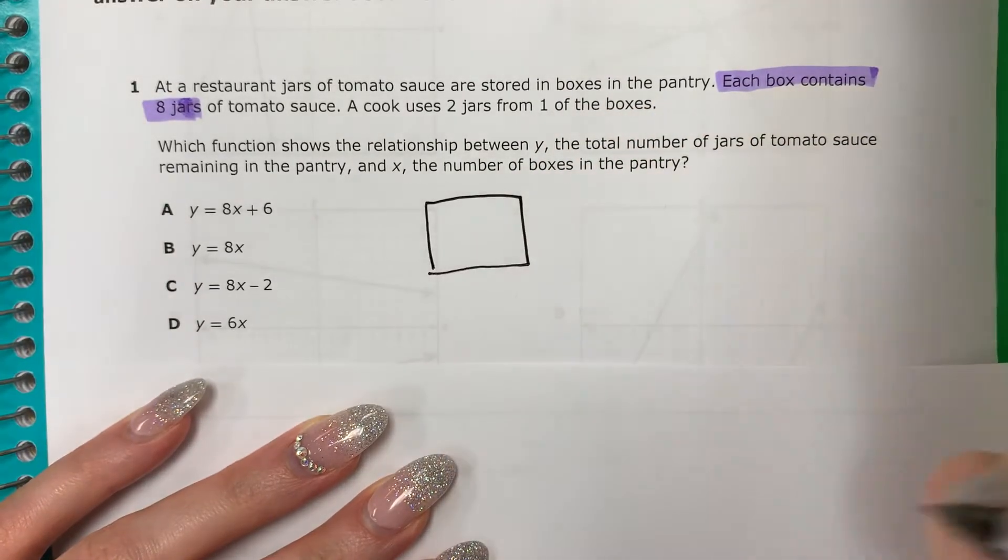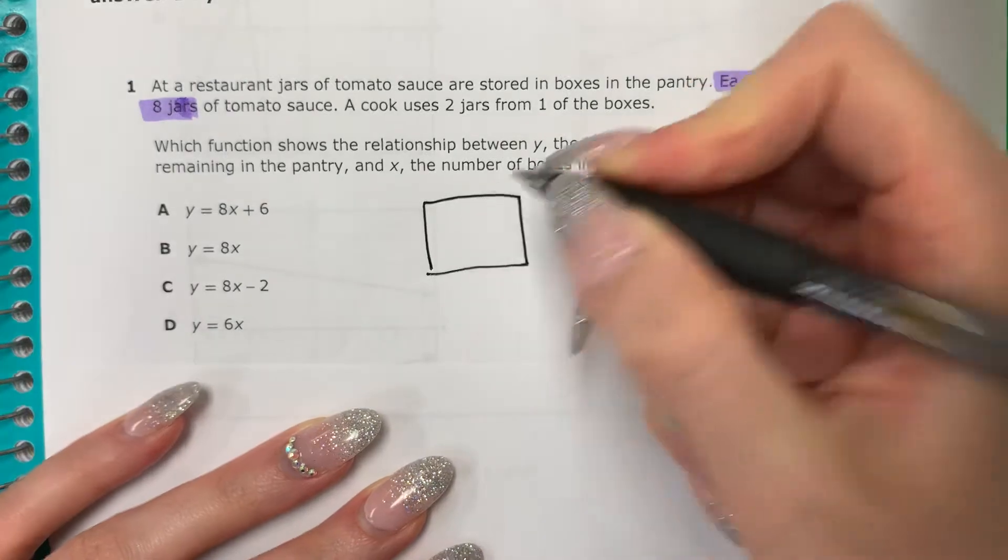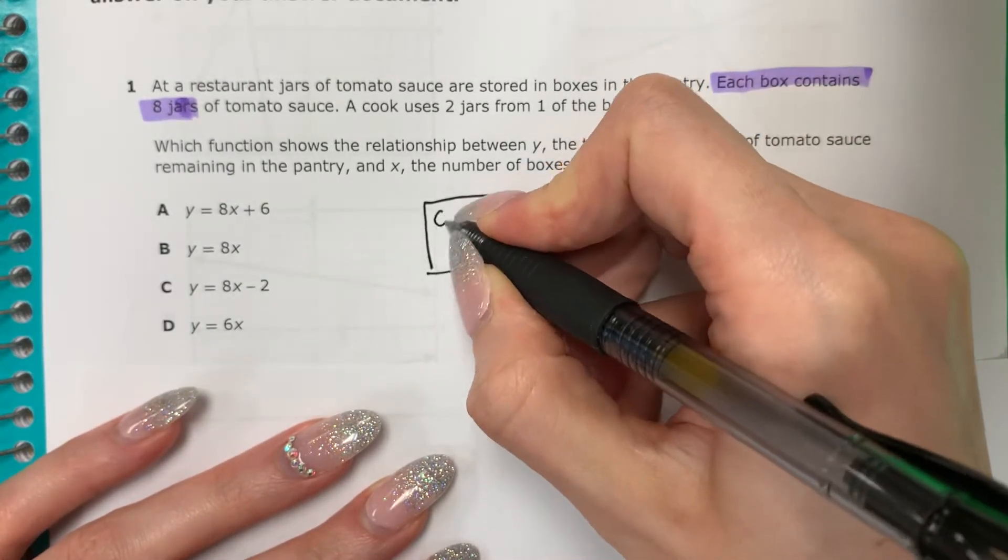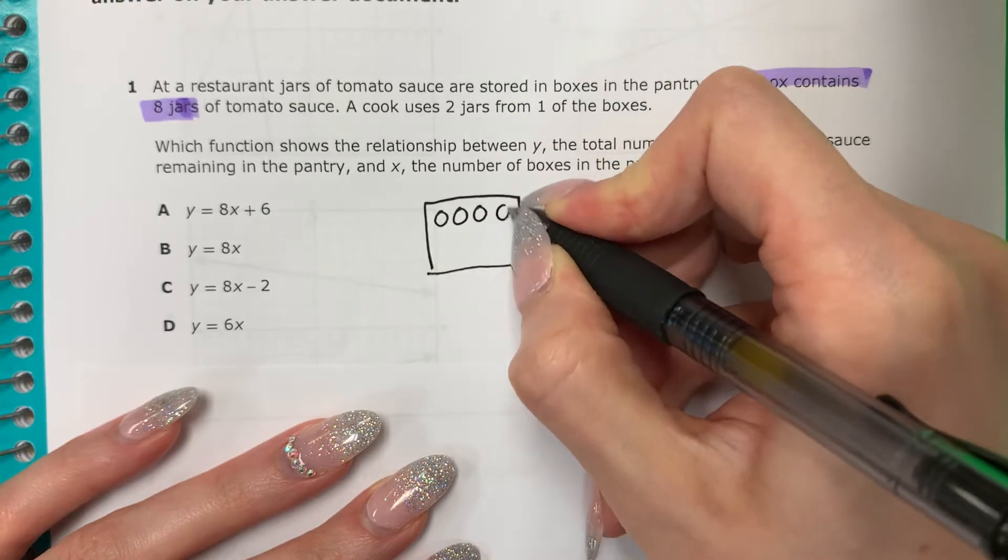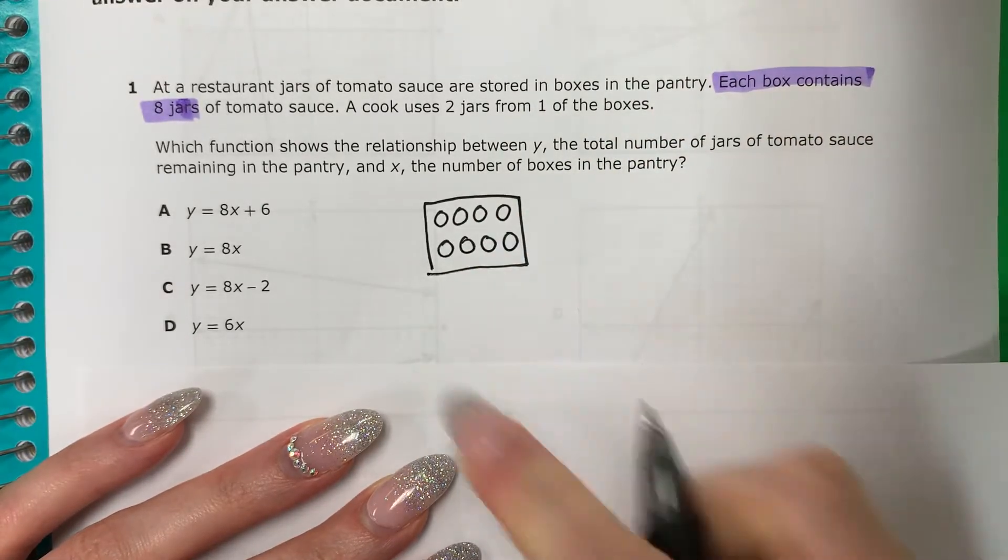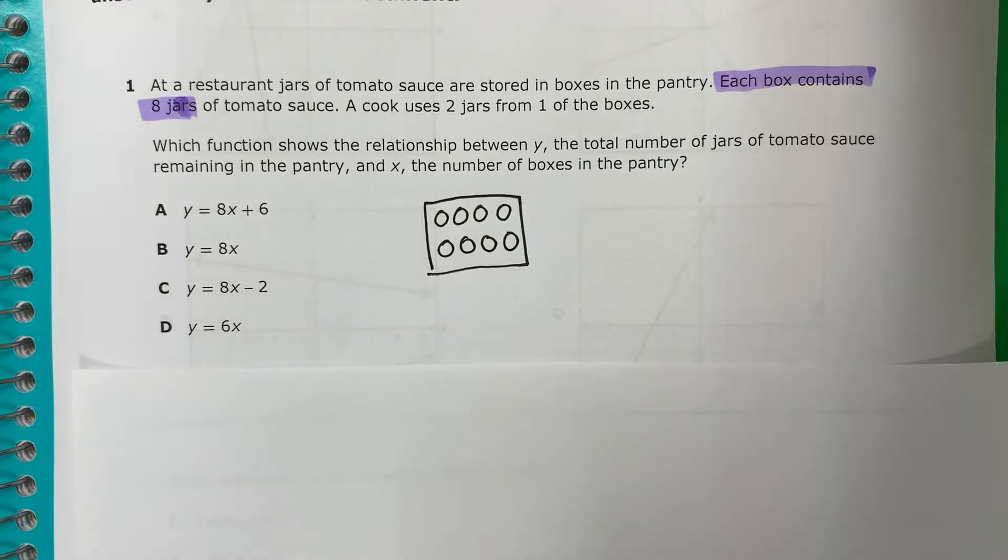And inside each box, y adentro de cada caja, I have 8 jars. Tengo 8 frascos. So 1, 2, 3, 4, 5, 6, 7, 8. And I have many boxes. Y tengo muchas cajas.